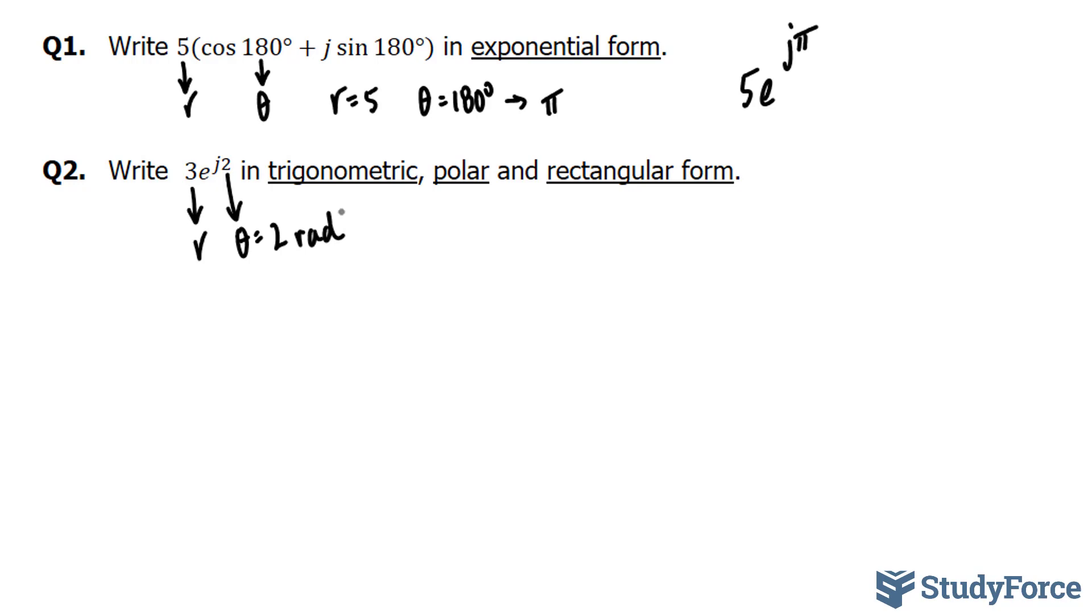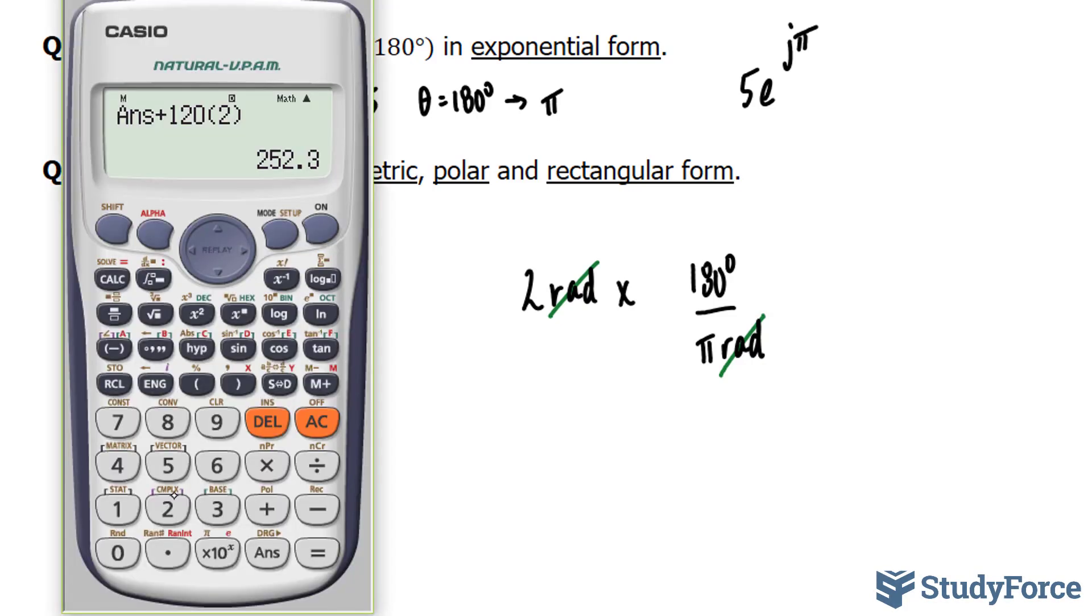Let's convert 2 radians into degrees. 2 radians times 180 degrees over pi radians. The radians will cancel out the unit where we're left with 2 times 180 divided by pi. Using our calculator, 2 times 180 divided by pi gives us approximately 114.6.